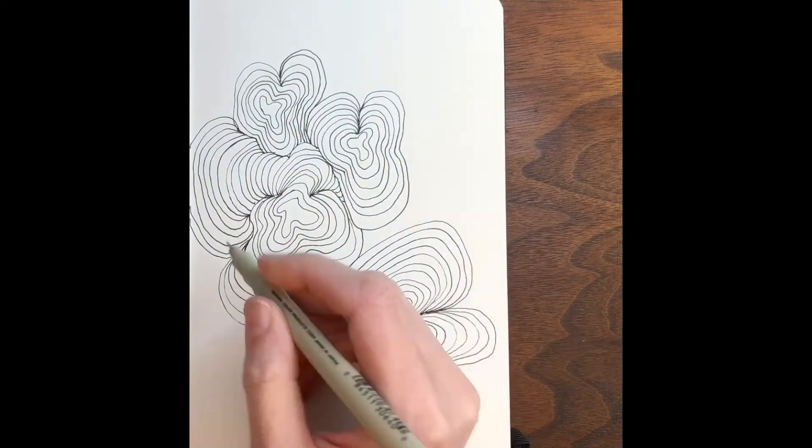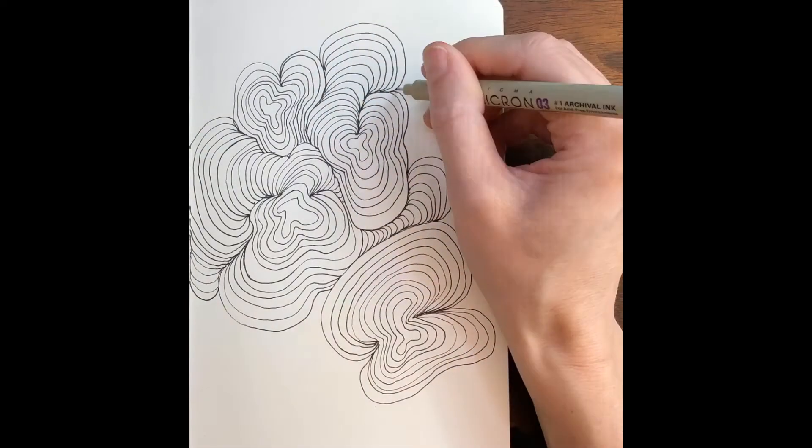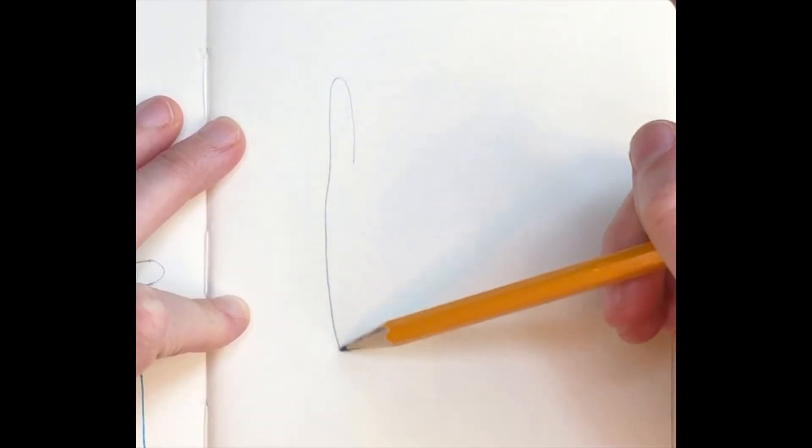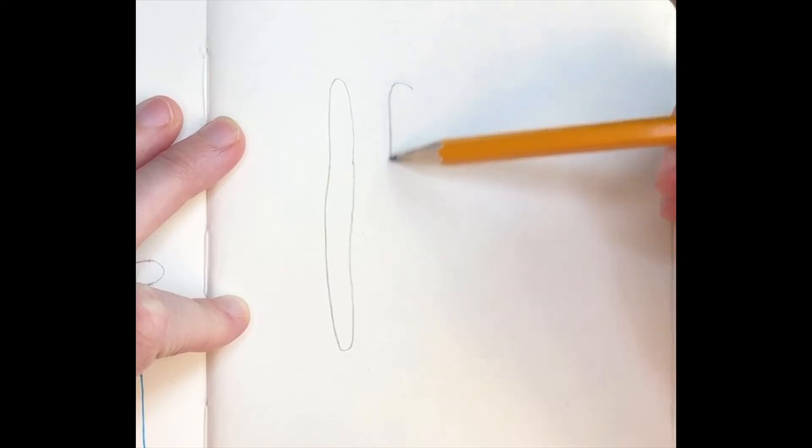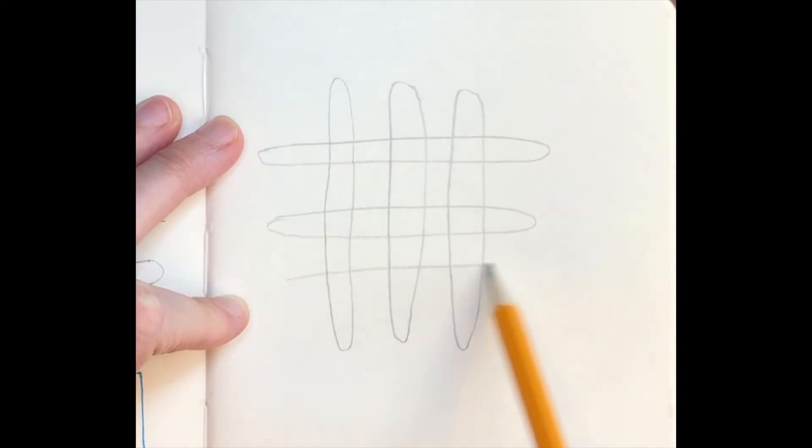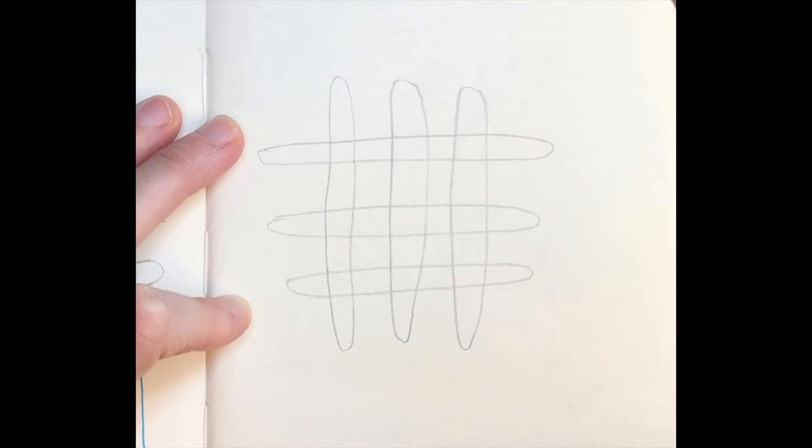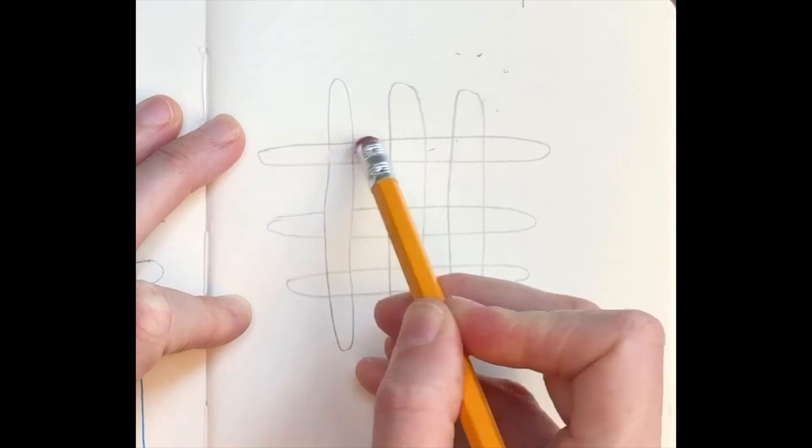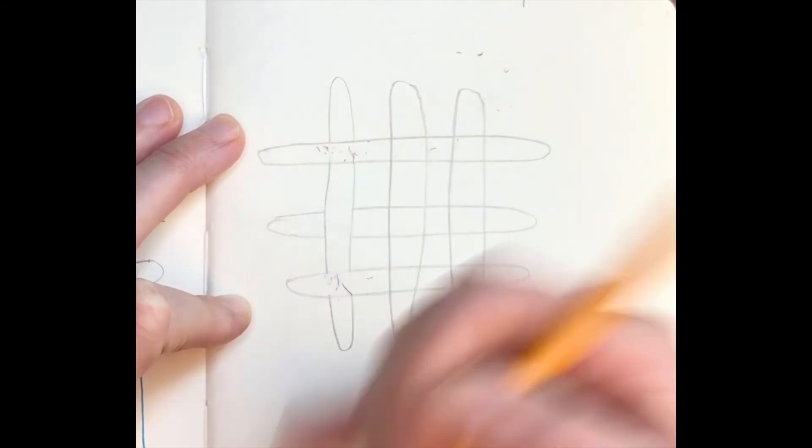This type of drawing is abstract but it really reminds me of topographical maps that show how high certain land forms are. The last thing I'm going to show is how to make a doodle that has overlapping parts. When I say overlapping it means that some parts of the drawing look like they're in front of other parts. I started this drawing by making these kind of long oval shapes right on top of each other and then I'll go back in with my eraser and I'll start to erase some of the lines so these shapes look like they're overlapping.